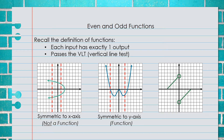For the third graph, we see it is symmetric with respect to the origin. Symmetric to the origin means if you were to rotate the graph 180 degrees, it would look exactly like the original. We perform the vertical line test by placing vertical lines across the graph, and it turns out this is a function because it only passes through each point one time.